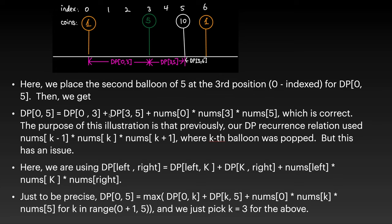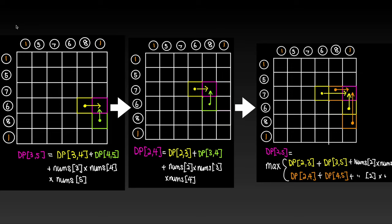Just to be precise: dp[0][5] is not equal to just one case — you have to take the maximum of dp[0][k] + dp[k][5] + nums[0] * nums[k] * nums[5] for all k from 1 to 4. Here we just picked k=3 for illustration. For the bottom-up approach, you have this dp array and start with dp[3][5], which is dp[3][4] + dp[4][5] + this product. Initially all entries are zero, so dp[3][5] is just zero.